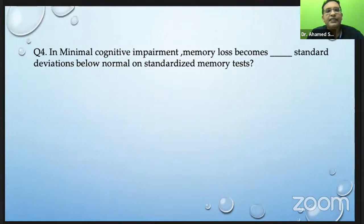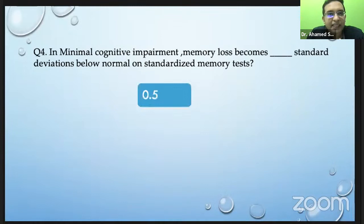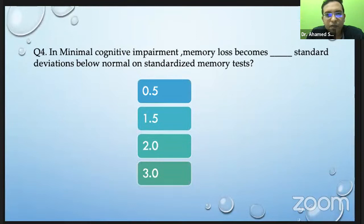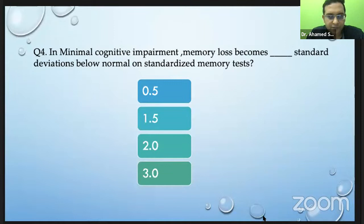In MCI, memory loss becomes apparent when you do a standardized memory test. When will you call it MCI — mild cognitive impairment? Most of you answered correctly. In minimal cognitive impairment, memory loss becomes apparent when there is a score more than 1.5 standard deviations below the mean on a standardized memory test.